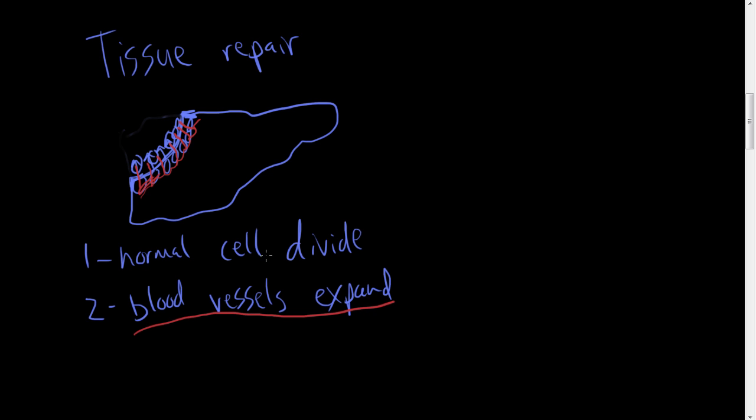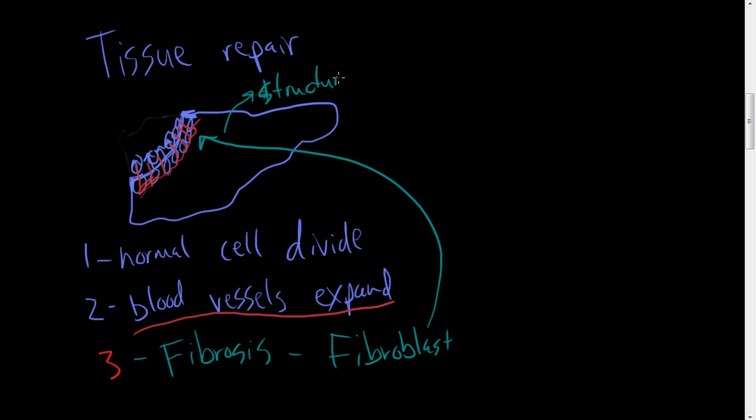The blood vessels expand with the normal cells dividing, and also you're going to have fibrosis. So you're going to have these fibroblasts, they're also going to help with structure. It might be temporary or permanent depending on how well these cells can divide and multiply by themselves. So you're going to have normal cell division filling this area, blood vessels expanding, and fibroblasts coming in to help with the tissue structure.